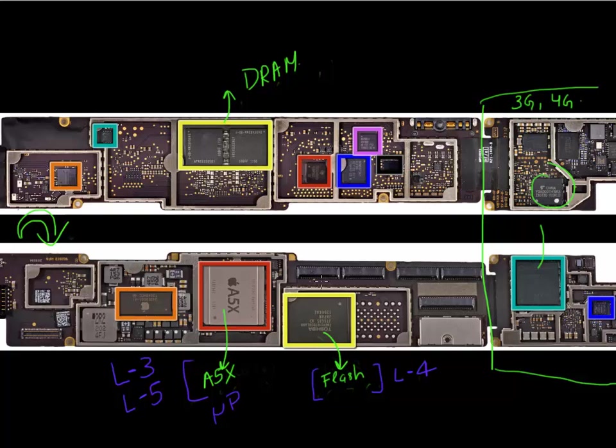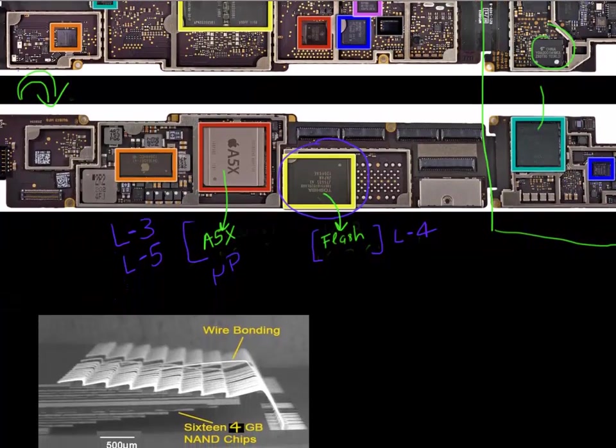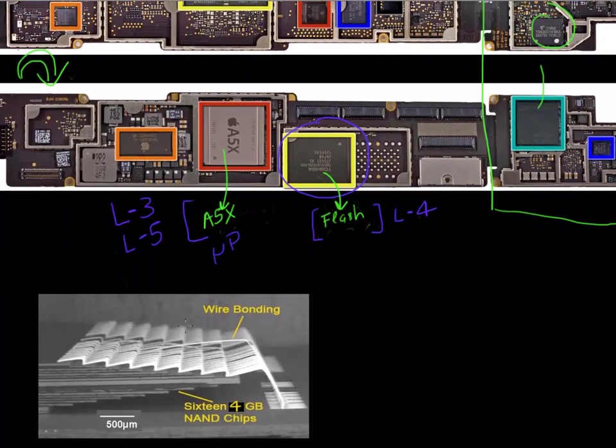So let's take a closer look at this flash memory chip. If you open this die which has this flash memory cell, shown here is this die which has 64 gigabyte of flash memory storage. What you see is there are 16 of these chips which are wire bonded to each other. They are connected to each other using these wire bonds. Each of them has 4 gigabyte of capacity.